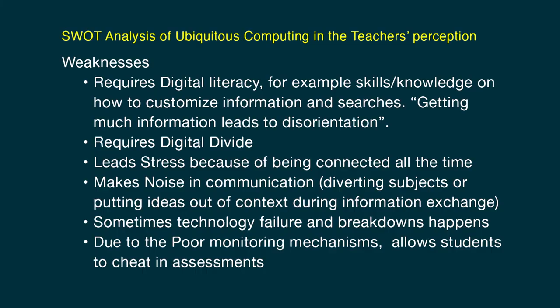The weaknesses of ubiquitous learning include: it requires digital literacy — skills and knowledge on how to customize information; too much information leads to disorientation; it requires bridging the digital divide; it leads to stress from being connected all the time; it creates noise in communications; and diverting subjects or ideas being taken out of context during information exchange. Technology failure and breakdown also occur in ubiquitous learning, and poor monitoring mechanisms make it easier for students to cheat in assessments.